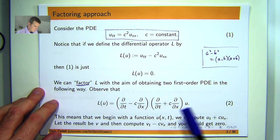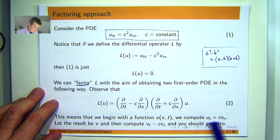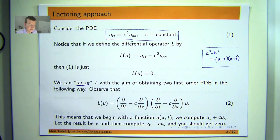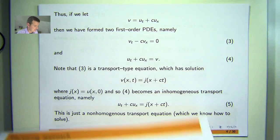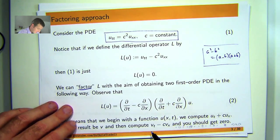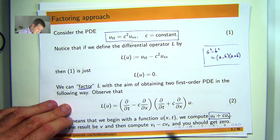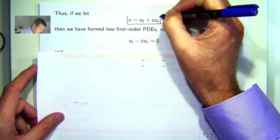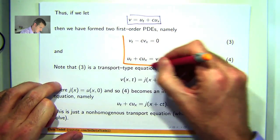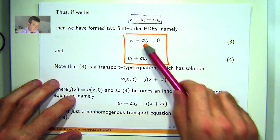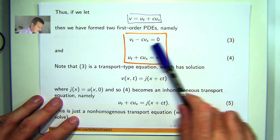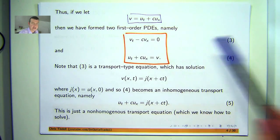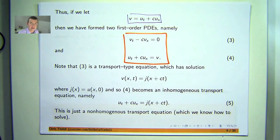So what does this expression mean? Well, it means that you first of all compute this. Let the result be V and then you compute this. And L of U equals 0 means you should get 0. If you let V be that expression, then essentially you get two first order PDEs.